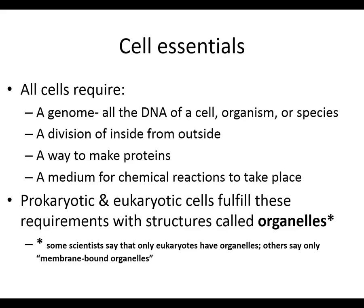Prokaryotes are always unicellular and have some basic cell structures. These structures are common to all cells: they all have to have a genome, a cell membrane, ribosomes, and cytoplasm. All cells require a genome — all the DNA of any cell. A cell membrane to separate what is the cell from the rest of the world. Ribosomes — a way to make proteins. And cytoplasm — a medium for chemical reactions to take place.